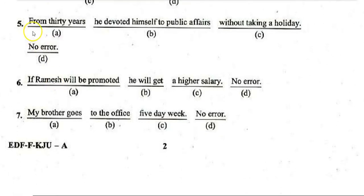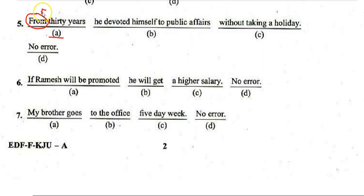Next: 'From 30 years, he devoted himself to public affairs without taking a holiday.' The error is again in section A — it should be 'For 30 years, he devoted himself to public affairs without taking a holiday.'